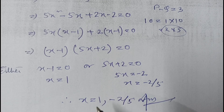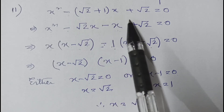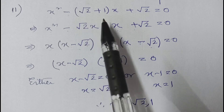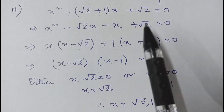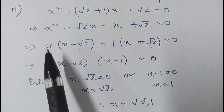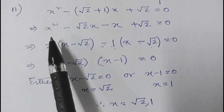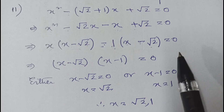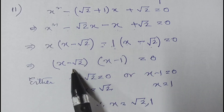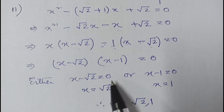Question number 11: x² - (√2 + 1)x + √2 = 0. Expanding the middle term: x² - √2·x - 1·x + √2 = 0. From the first two terms, take x common: x(x - √2). From the last two terms, take -1 common: -1(x - √2). So (x - √2)(x - 1) = 0, giving x = √2 or x = 1. Therefore the roots are √2 and 1.